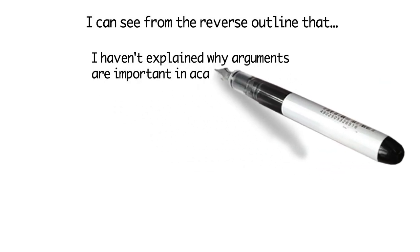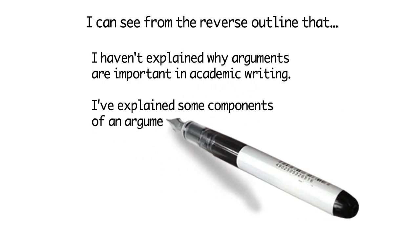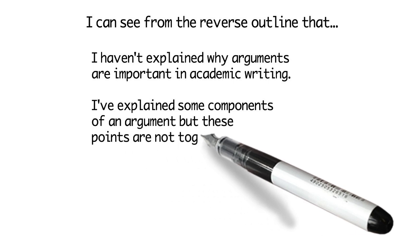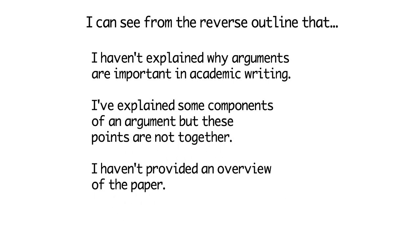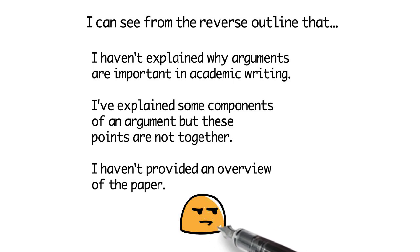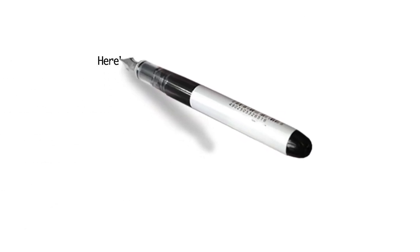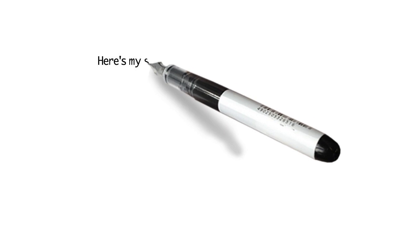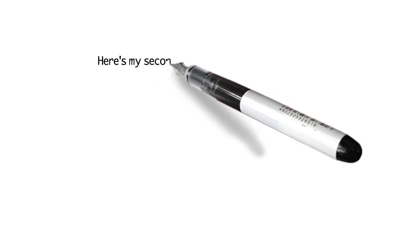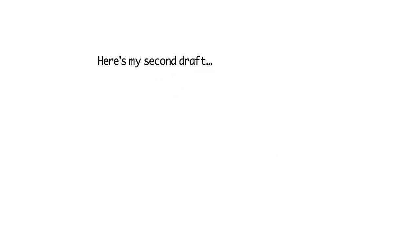I can see from the reverse outline that I haven't really explained why arguments are important in academic writing. I've explained some components of the arguments but these points are not together, and I haven't provided an overview of the paper. So I now know what to change.